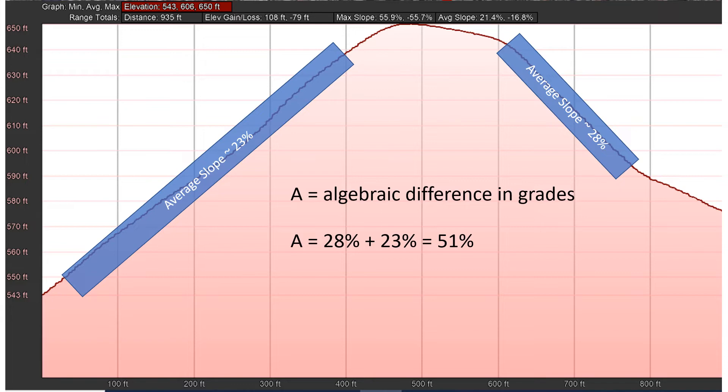And that's huge. That's an extreme algebraic difference in grades. Most vertical curves are nowhere close to this. They can vary from very small up to larger, but obviously 51% is a very high algebraic difference in grades.